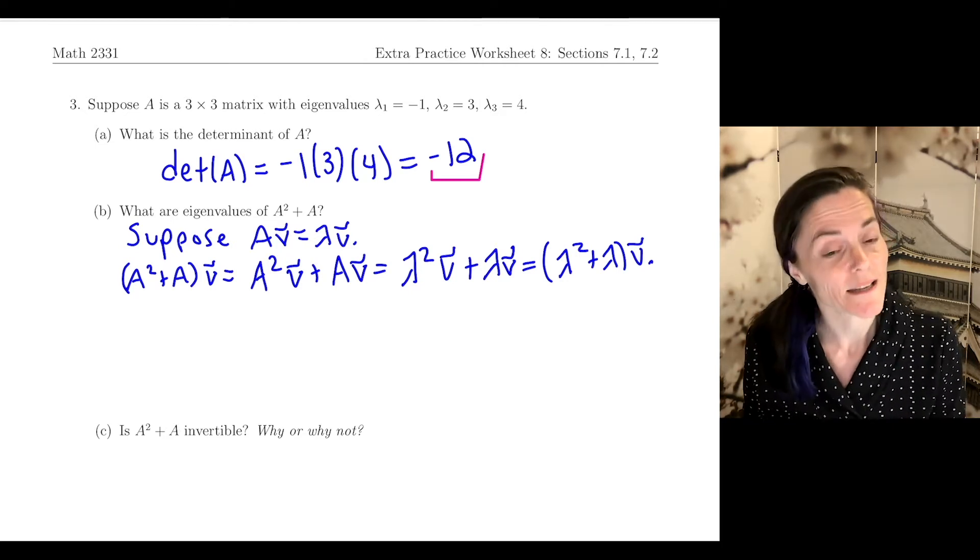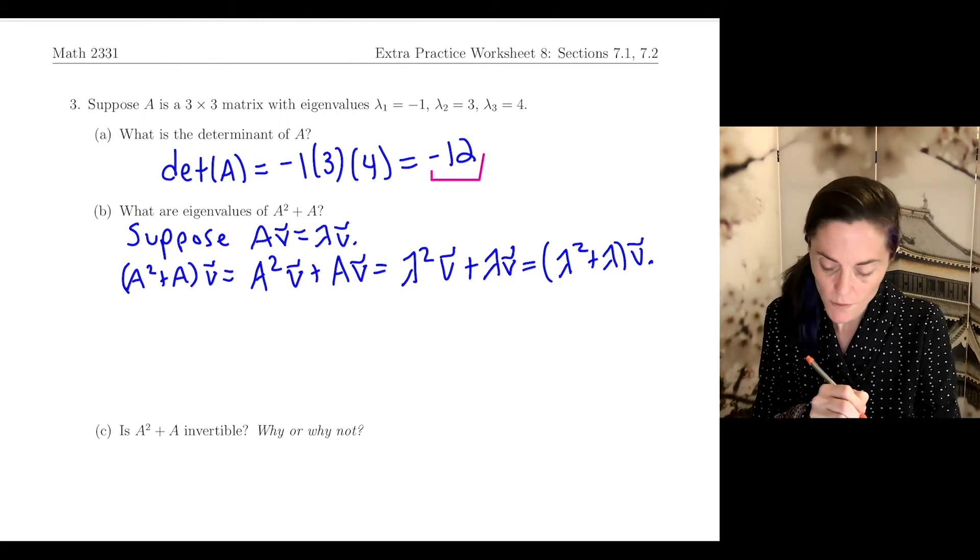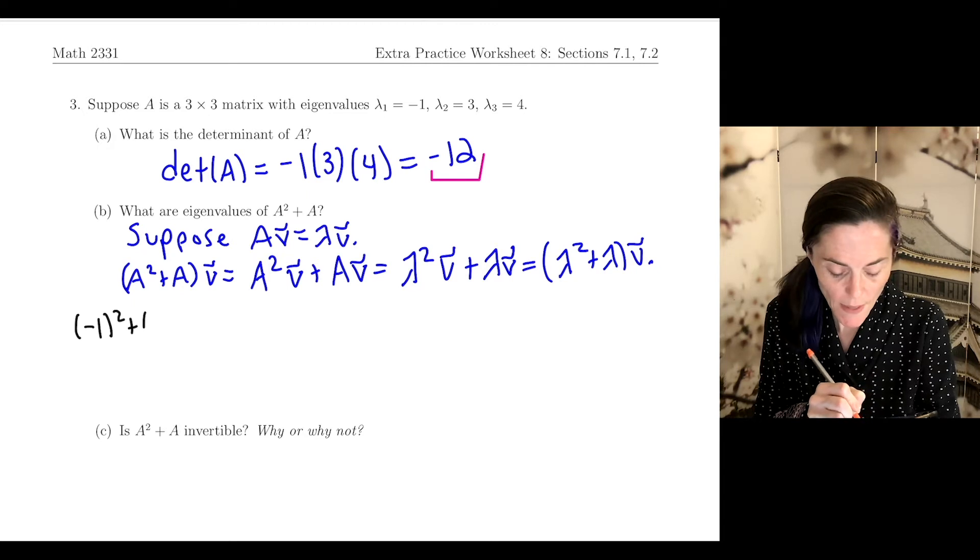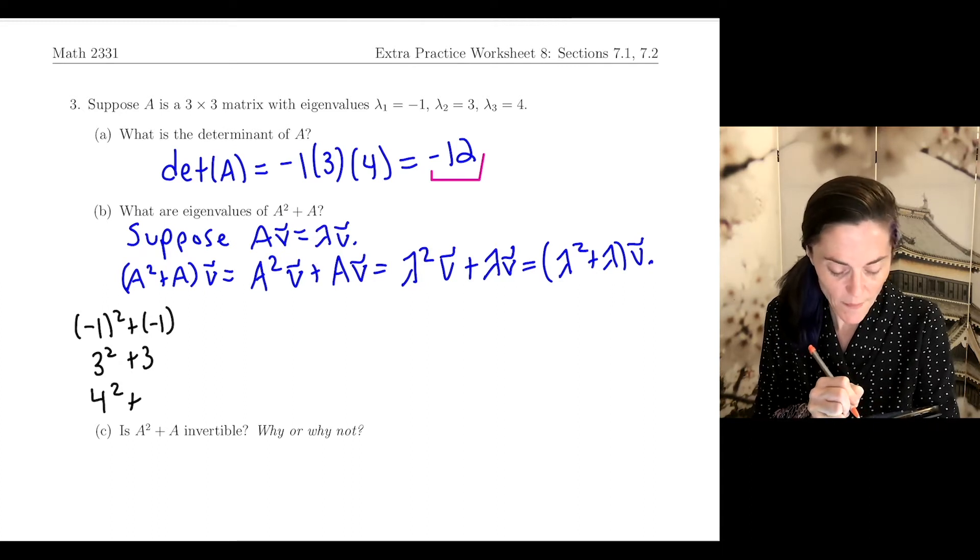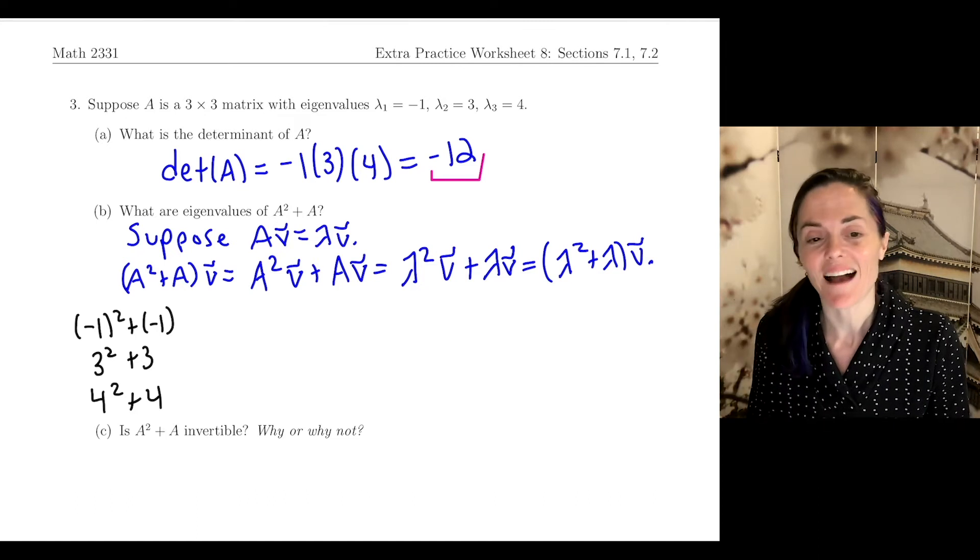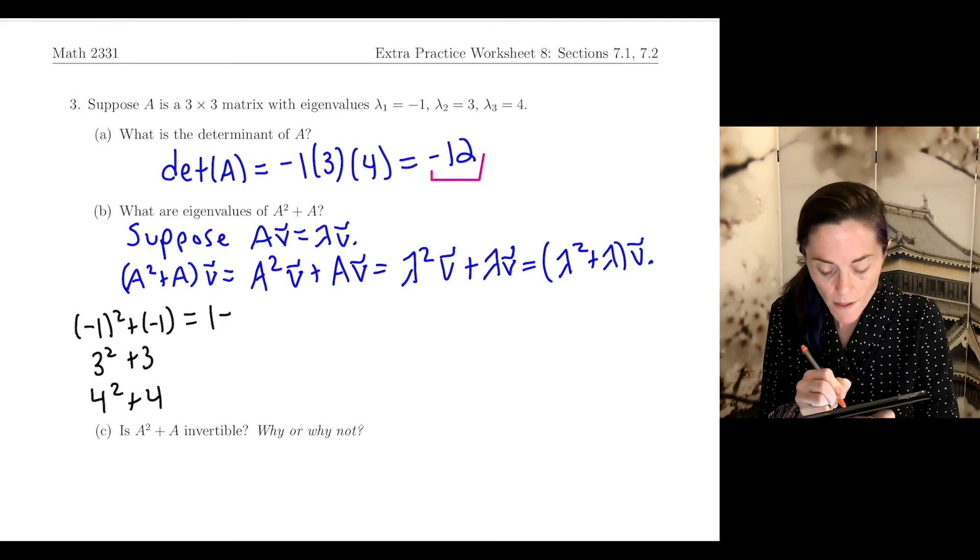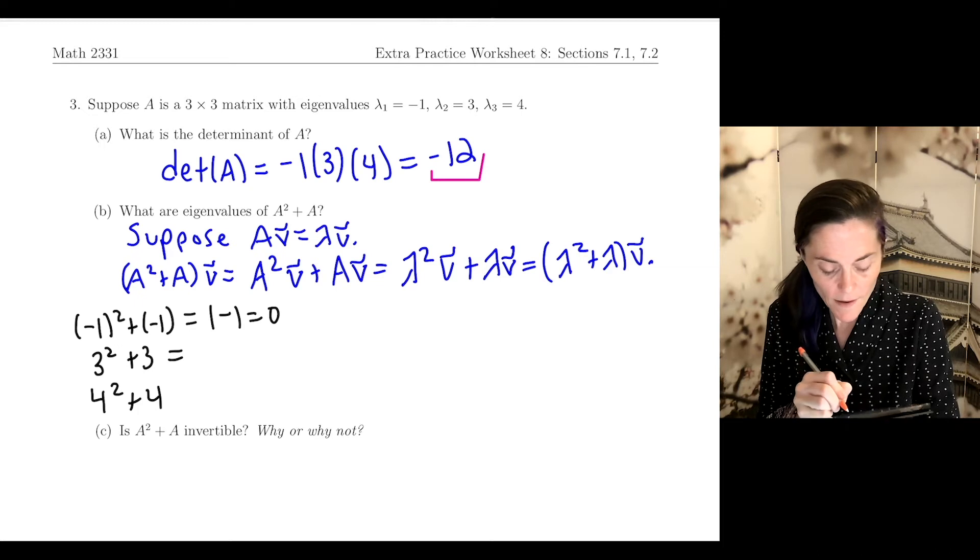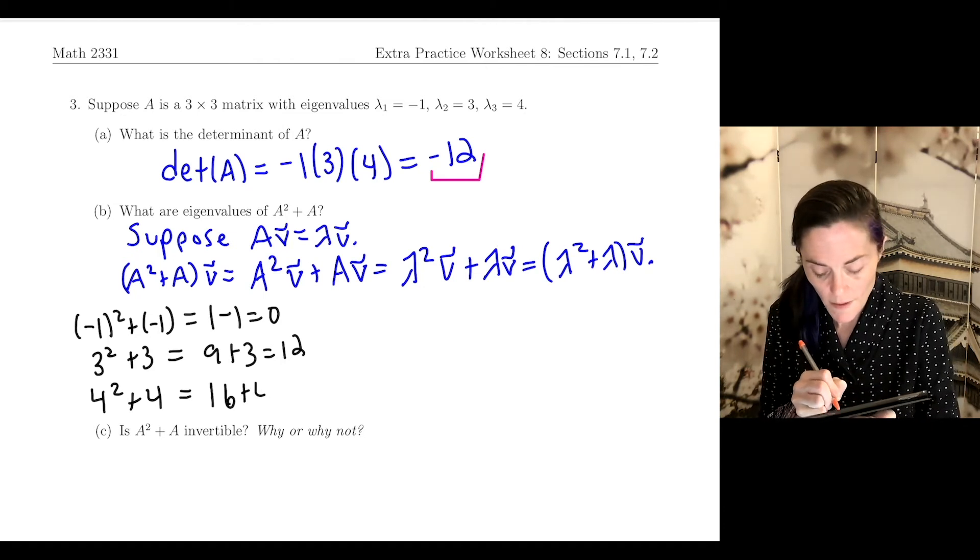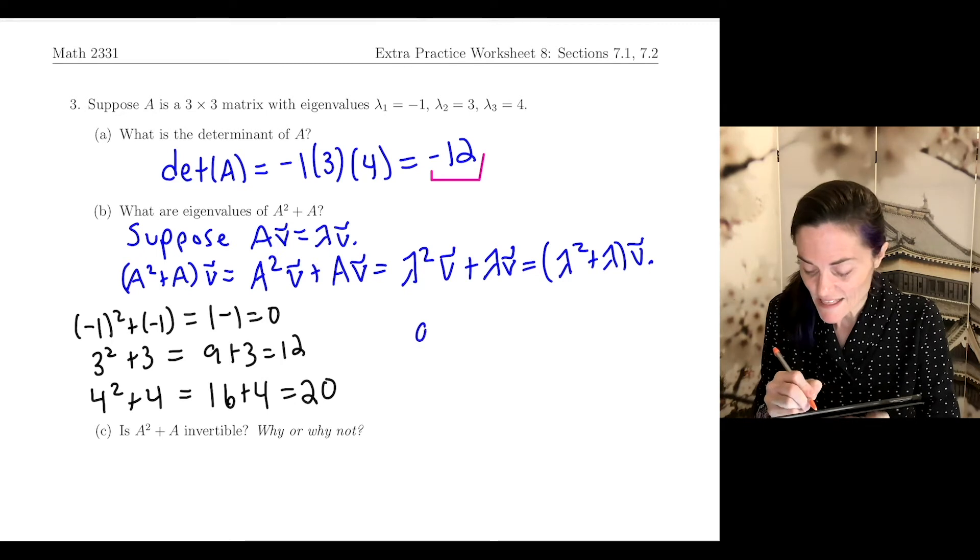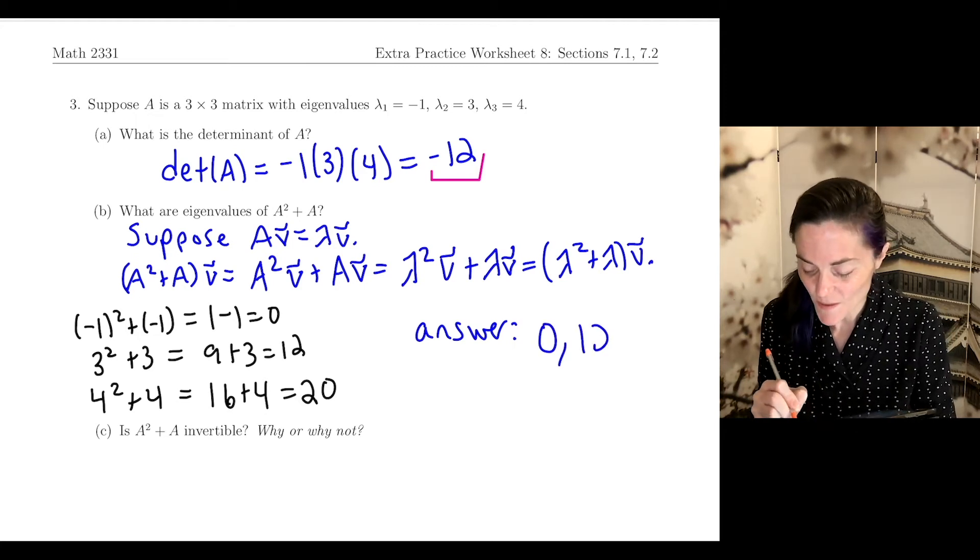To answer the question now, we have three different eigenvalues for matrix A. So I need to compute (-1)² + (-1), which is 1 - 1 = 0. I need to compute 3² + 3 = 9 + 3 = 12. And I need to compute 4² + 4 = 16 + 4 = 20. These will be my three eigenvalues for A² + A: 0, 12, and 20.